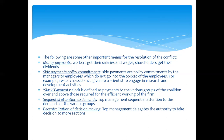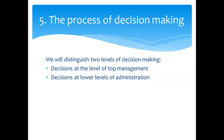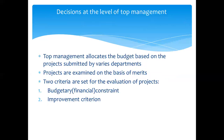The process of decision-making operates at two levels. First, at the top management level: top management allocates the budget based on projects submitted by various departments. Projects are examined on the basis of merits using two criteria — one is the budgetary constraint, and second is whether this allocation will make any improvement in the activities of the firm.